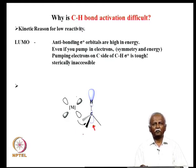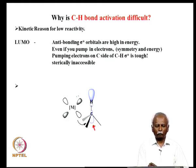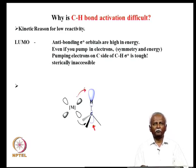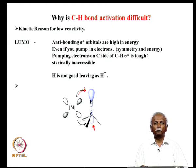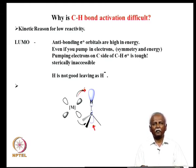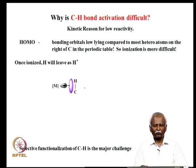The interaction is shown by the arrow. It would be easier to pump in electron density onto the hydrogen, but if you just push in electron density into the hydrogen, you would have to generate it as H minus — you have to dislodge it as H minus — and that would also be an extremely difficult task.